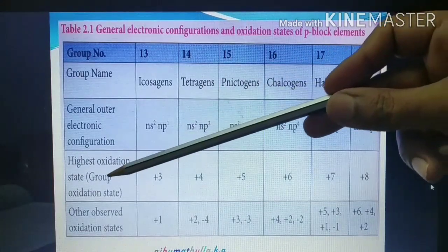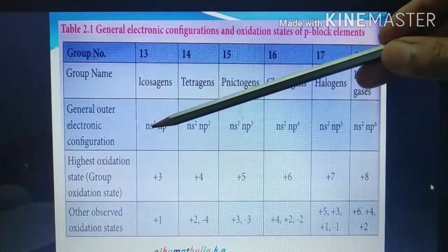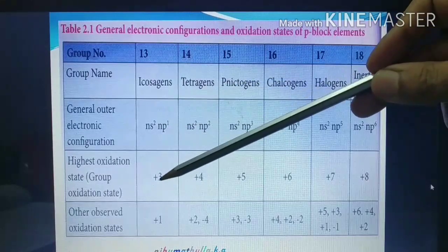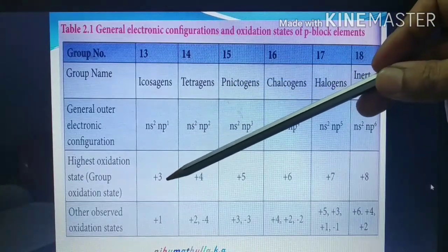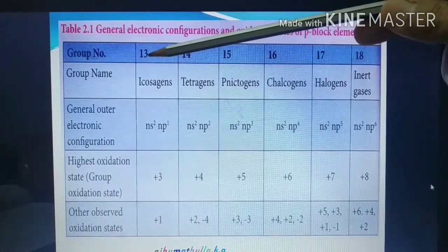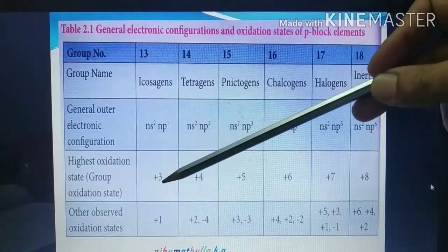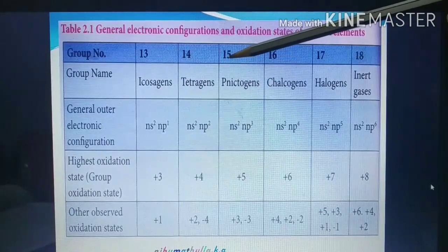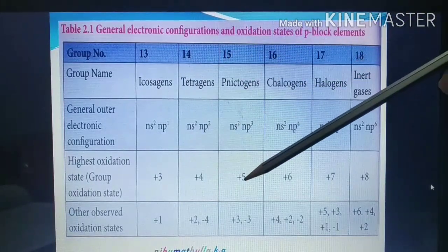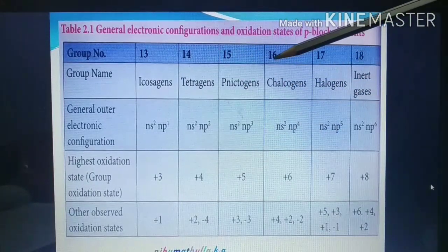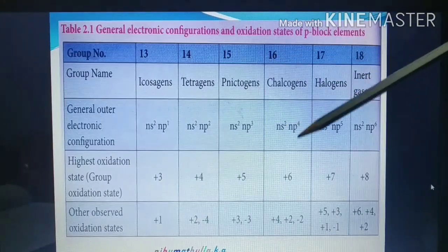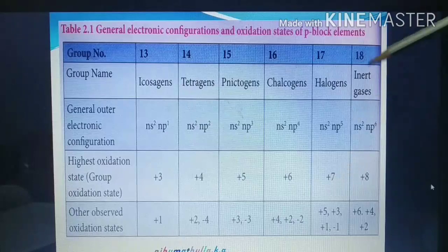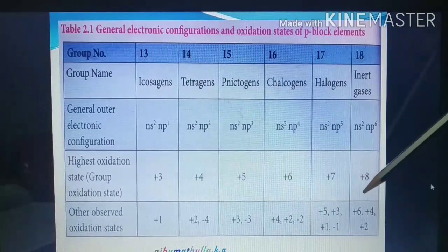The highest oxidation state — the group oxidation state — equals the number of electrons in the outermost valence shell. For Group 13 it is +3, Group 14 is +4, Group 15 is +5 (five electrons in the valence shell), Group 16 is +6, Group 17 is +7 (five plus two equals seven), and Group 18 is +8.